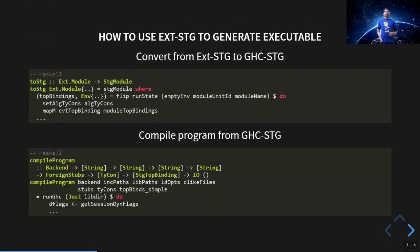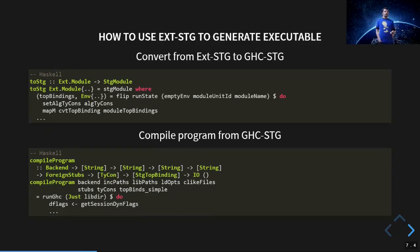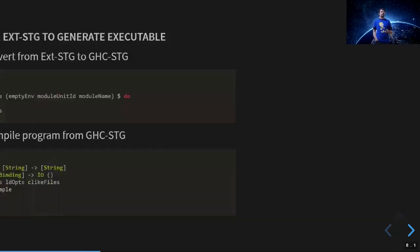We hope to use the external STG to generate executables, which kind of works out of the box. From an external STG module we can simply get an STG module for the GHC compilation pipeline, and use the compile program to compile the top-level bindings from that module. We use this to generate executables using GHC as a code generator.